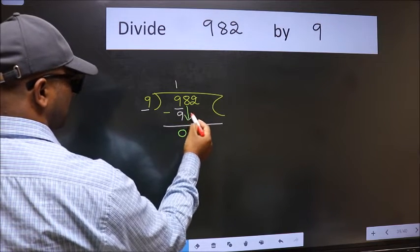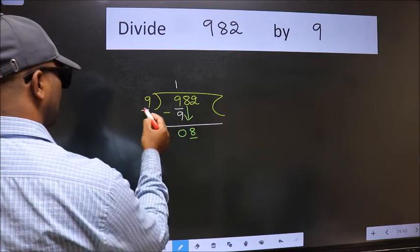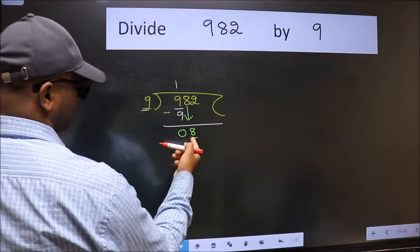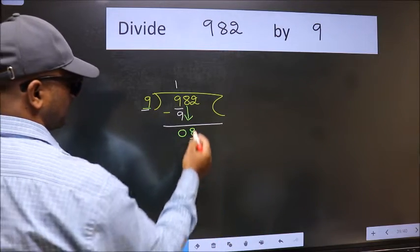After this, bring down the next number. So 8 down. Now here we have 8 and here 9. 8 is smaller than 9. So we should bring down the second number.